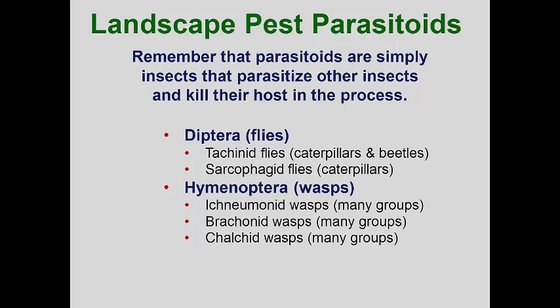Without a doubt, parasitoids have been the most useful and active of the beneficial insects, especially when introduced to control invasive pests. A parasitoid is an insect that parasitizes another insect and, in the process, kills its host. Most other parasites, like roundworms, tapeworms, and flukes, live within their host but don't kill it. Entomologists value parasitoids because they eliminate the host, which may be causing plant damage. In our landscapes, two fly groups commonly parasitize caterpillars and some beetles, but it is the parasitic wasps that do most of the control.